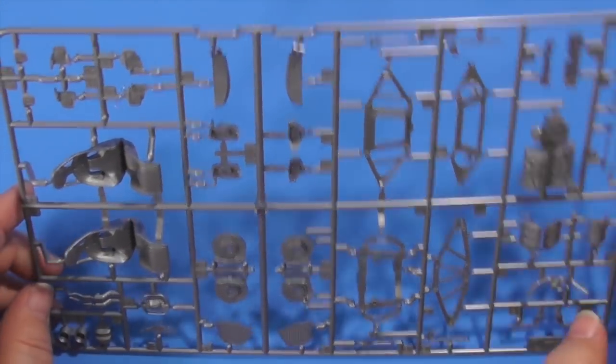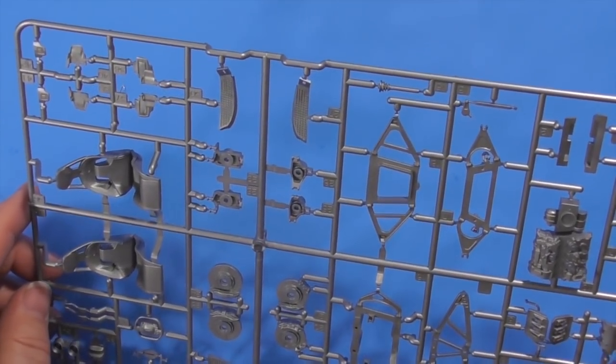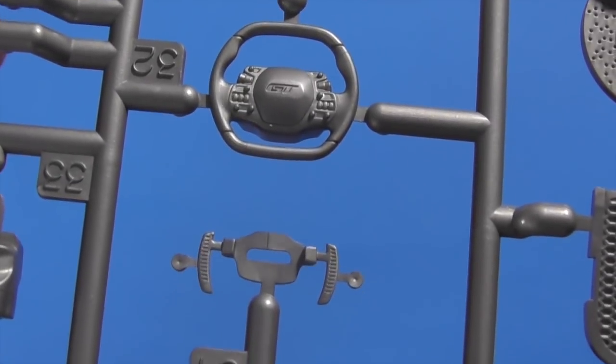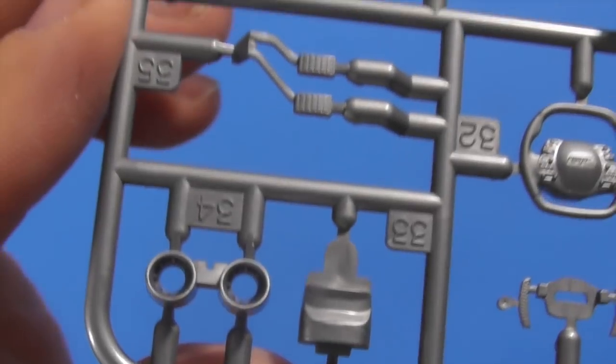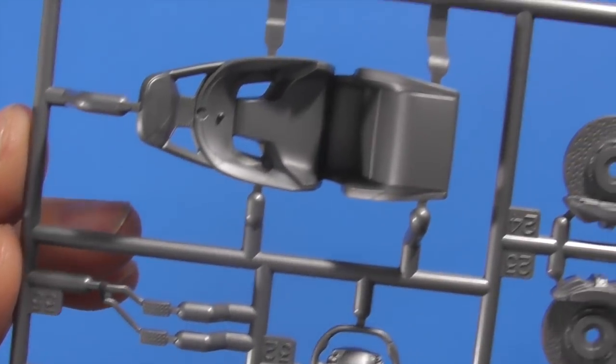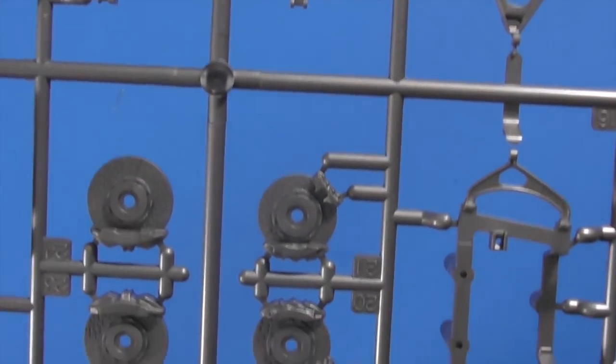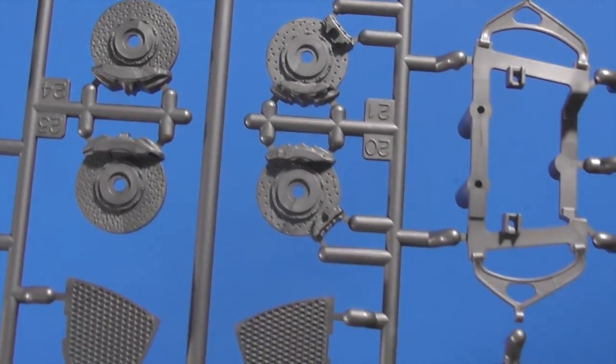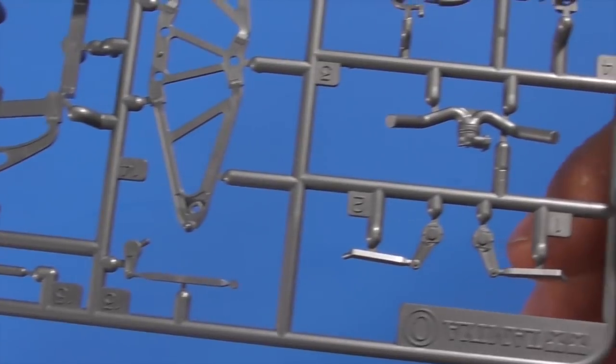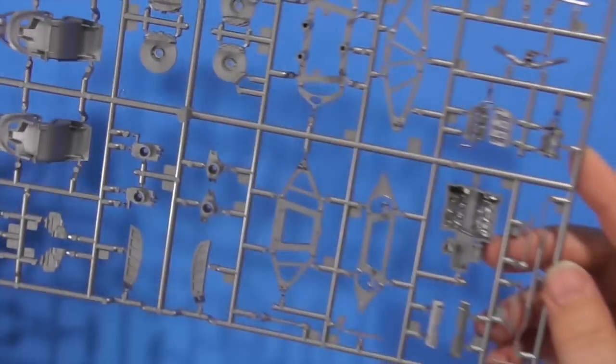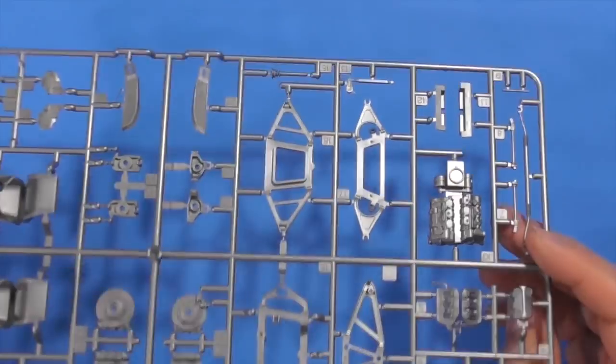Really good detail on the steering wheel. The brake discs. If you wanted, you could hollow out all those holes. I'd probably just do a wash. That'll make them pop. Here's the vents. And here, hopefully there'll be some photo etch ones available. The seats look really nice.